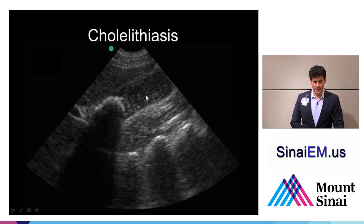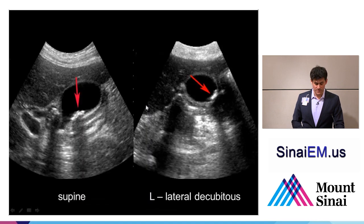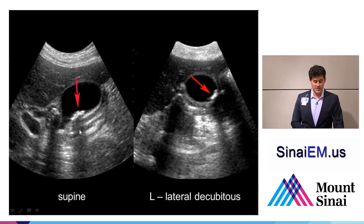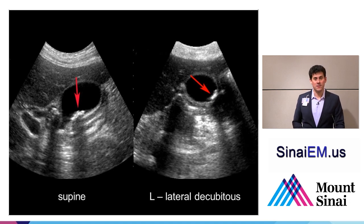Here we see another gallbladder in a longitudinal view — long from the gallbladder's perspective — with the fundus up here, towards the neck down here. There's a large stone or group of stones, and we only really see the anterior leading edge with shadowing coming down behind it. The portal vein is visible, and there's some debris or sludge inside the gallbladder. Stones normally should be free-moving. If a suspected stone isn't moving, it could be an impacted stone or it could be a polyp.